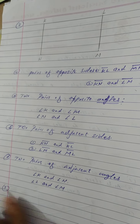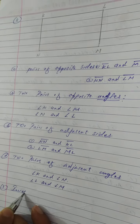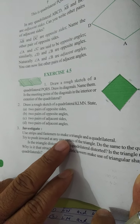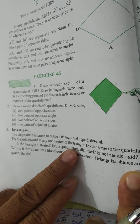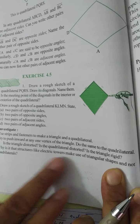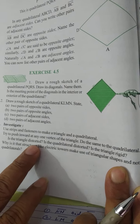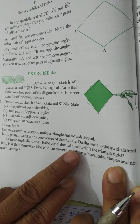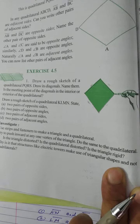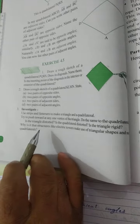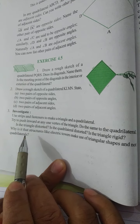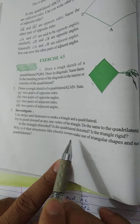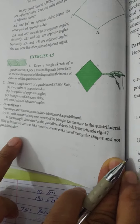Now example number three: Investigate. See the question. We use strips and fasteners to make a triangle and a quadrilateral. Try to push inward at any one vertex of the triangle. Do the same to the quadrilateral. Is the triangle distorted? Is the quadrilateral distorted? Why is it that structures like electric towers make use of triangular shapes and not quadrilaterals?